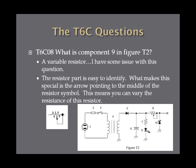What is component nine in figure T2? Component nine looks like a resistor, but it has an arrow coming off the lead and pointing into the middle of the resistor. This is a variable resistor. The instructor notes some variation exists in how this symbol is drawn, but for the exam this is the correct answer. The resistor part is easy to identify, and what makes it a variable resistor is the arrow pointing towards the center. So remember: arrow pointing towards the center on a resistor schematic means variable resistor.